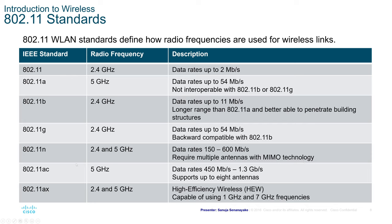802.11ac is a 5 GHz band that is also becoming popular for home users, supporting data rates up to 450 Mbps all the way to 1.3 Gbps and up to 8 antennas. 802.11ax operates on 2.4 and 5 GHz, supports High Efficiency Wireless (HEW), and is capable of using 1 GHz and 7 GHz frequencies as well.